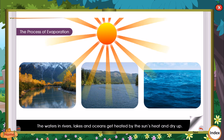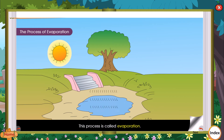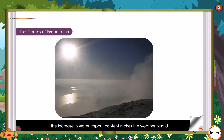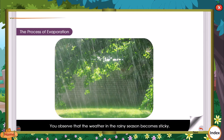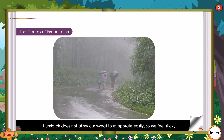The waters in rivers, lakes and oceans get heated by the sun's heat and dry up. The heat of the sun changes water to water vapour — this process is called evaporation. When the sun shines more brightly, more water gets evaporated, so the water vapour content in the air increases. The increase in water vapour content makes the weather humid. Humid air does not allow our sweat to evaporate easily, so we feel sticky.